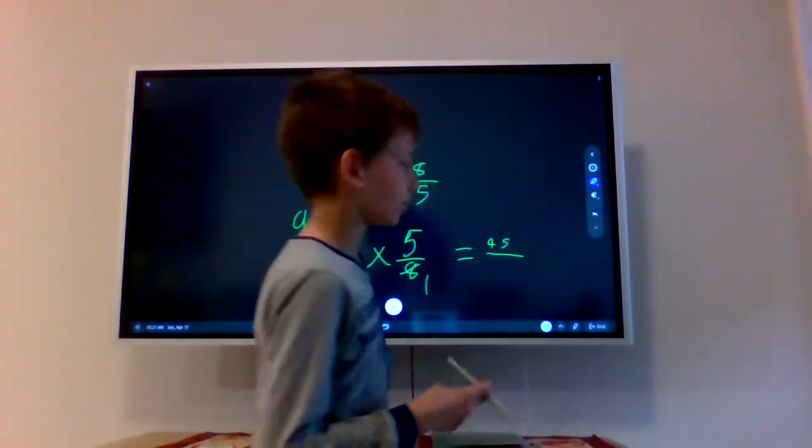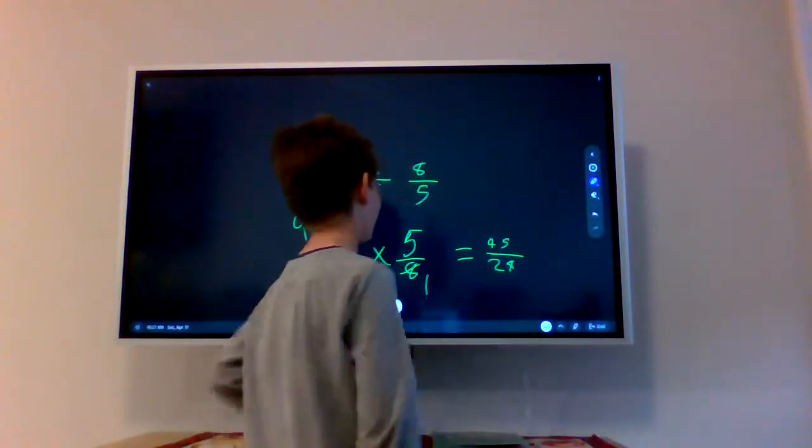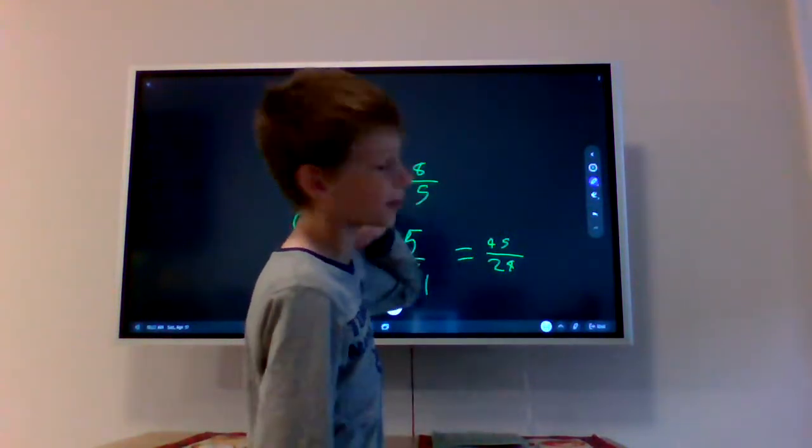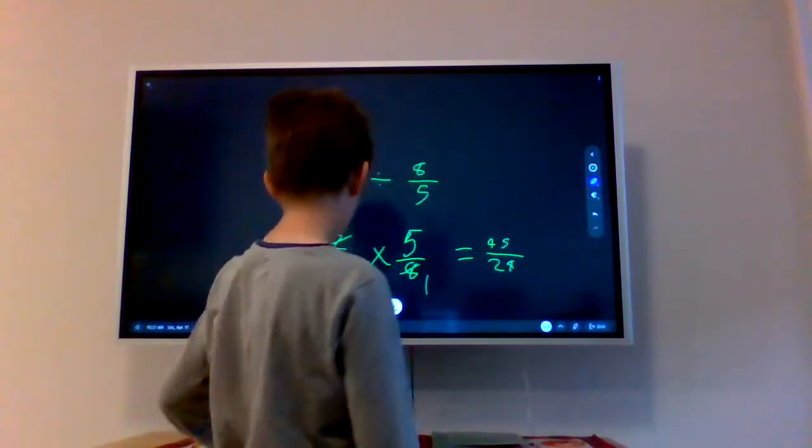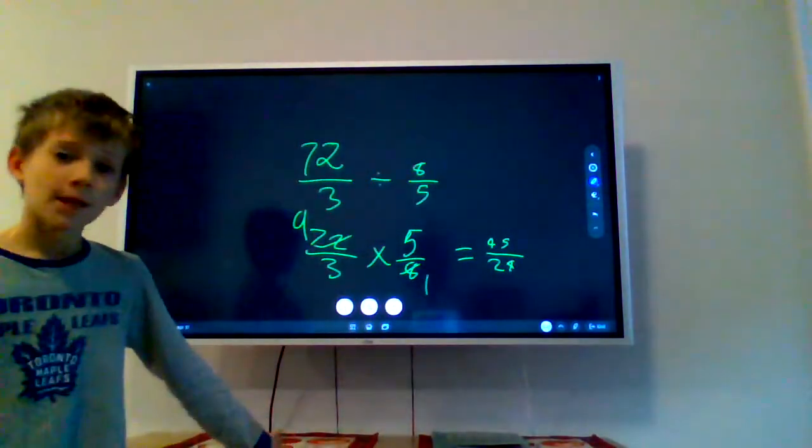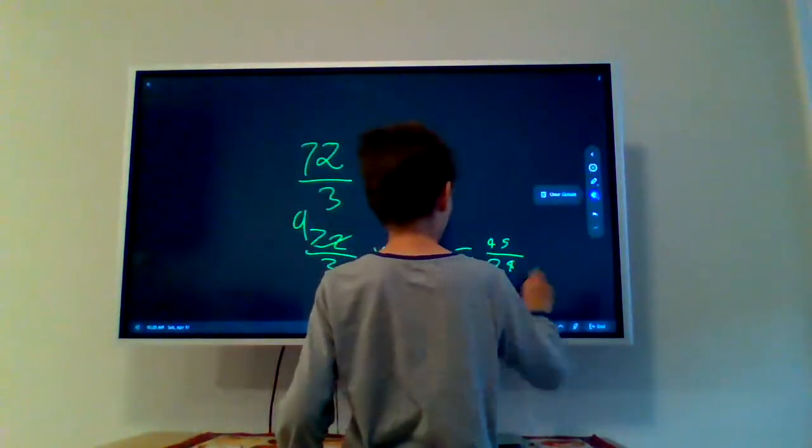And 8 times 3, 3 times 8 is 24. If only that number was 48, we could have made that 2. Anyways, that's another example.